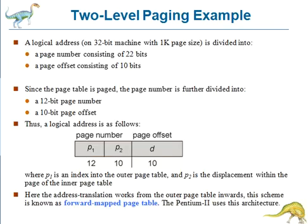Consider a 32-bit machine with a page size of 4 KB. A logical address is divided into a page number consisting of 20 bits and a page offset consisting of 12 bits. Because we paged the page table, the page number is further divided into a 10-bit page number and a 10-bit page offset. Thus, a logical address is structured as follows.